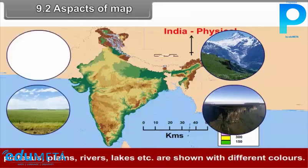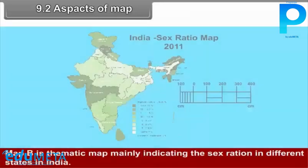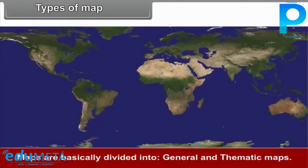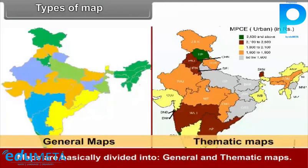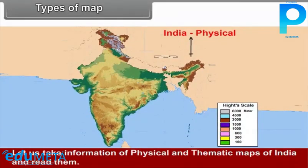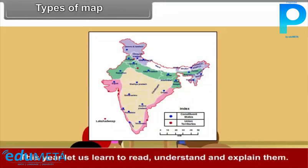Map B is a thematic map mainly indicating the sex ratio in different states in India. Maps are basically divided into general and thematic maps. One needs to develop the skill to read maps and understand them. Let us take information from the physical and thematic maps of India and read them. In the previous class, you learnt the types of maps. This year, let us learn to read, understand and explain them.